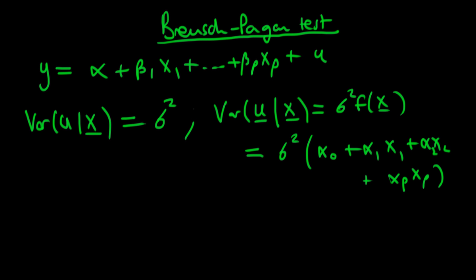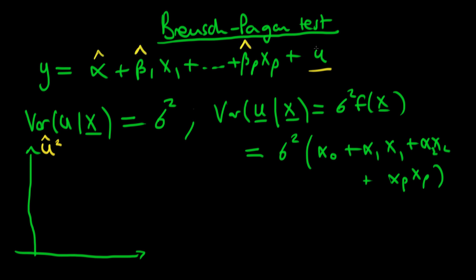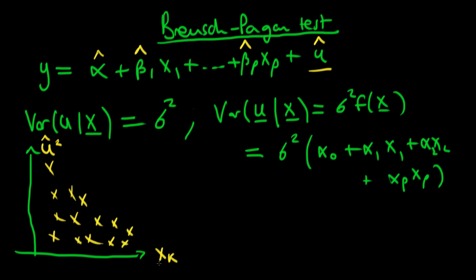So how do we test for this more general form of heteroskedasticity? Remember what we did in the case of the Goldfeld-Quandt test — we don't actually observe the population error u. What we do is look at our residuals, our estimated values of u, which we get from running our regression on our sample. If we square those and look at the variance of our errors along one variable x, we might observe something like our variance of residuals decreasing as x_k increases — that was the bivariate case with heteroskedasticity caused by one variable.